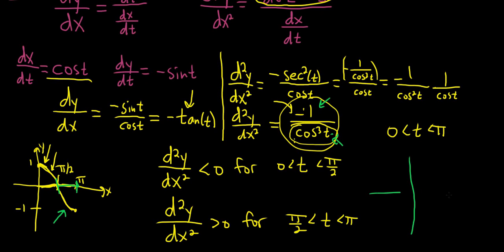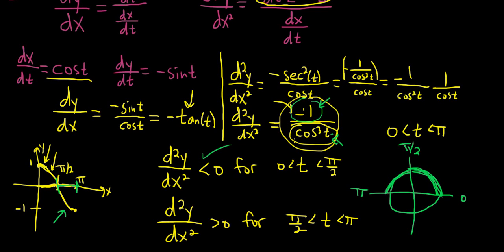Another way to think about it is with the unit circle. Between 0 and π/2, cosine is the x-coordinate on the unit circle, so it's positive, making cos³(t) positive. With the negative sign on top, the whole expression is negative — it checks out. Between π/2 and π, cosine is negative, so cos³(t) is negative, and negative over negative is positive — it checks out again.